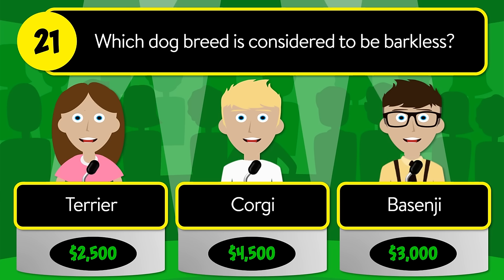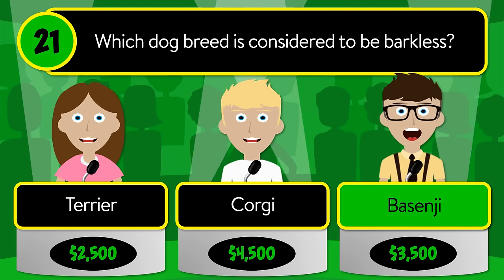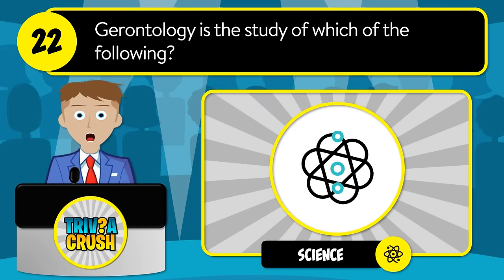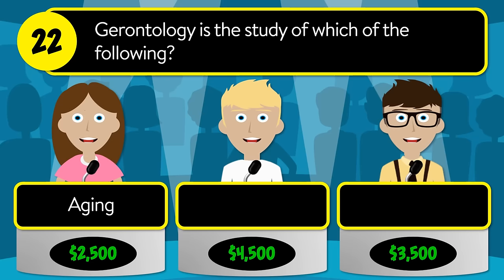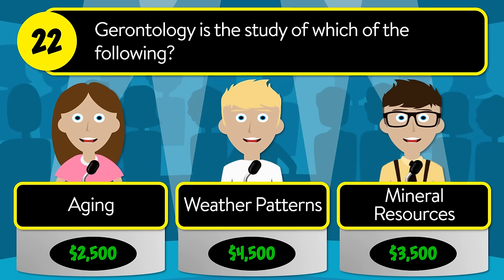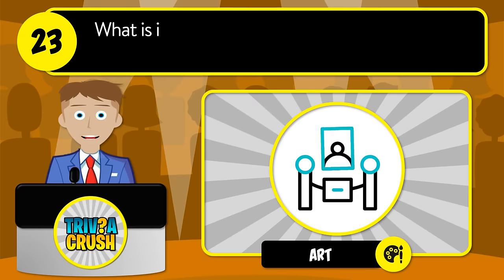Question number twenty-one: which dog breed is considered to be barkless? Is it terrier, corgi, or basenji? The correct answer is basenji. Question number twenty-two: gerontology is the study of which of the following? Is it aging, weather patterns, or mineral resources? The correct answer is aging.